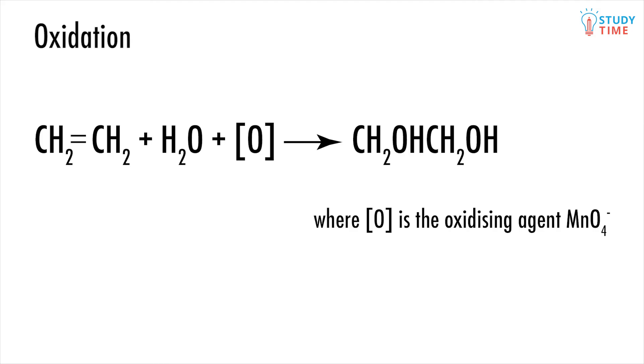Alkenes can be oxidized to form diols. It's very similar to addition, but two OH groups are added instead of one. This involves the oxidizing agent MnO4 minus, which is written as [O] into the equation. Recognize an oxidation reaction as being very similar to addition but will only ever make a diol and is the only reaction that will, at this level anyway.